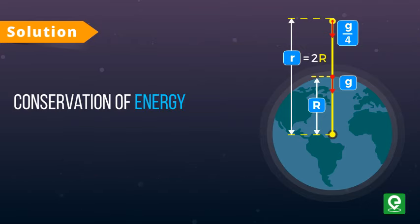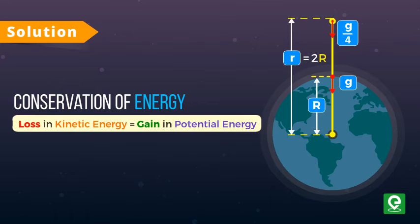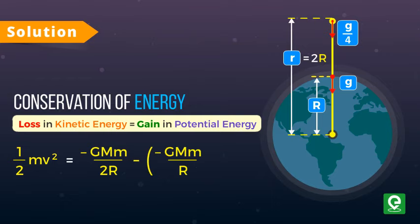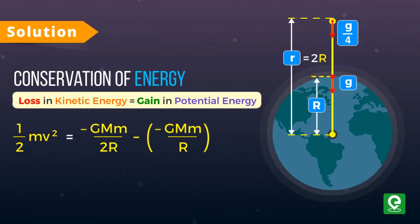According to conservation of energy, the loss in kinetic energy should be equal to gain in potential energy. Half mv squared equal to minus GMm by 2R minus into minus GMm by R. Solving this, we get v equal to root GM by R. Let's call this equation 2.